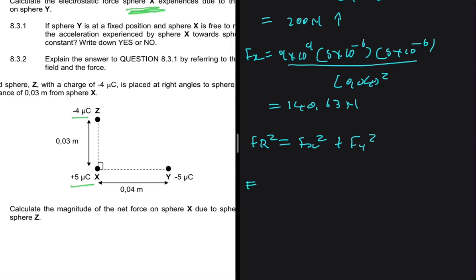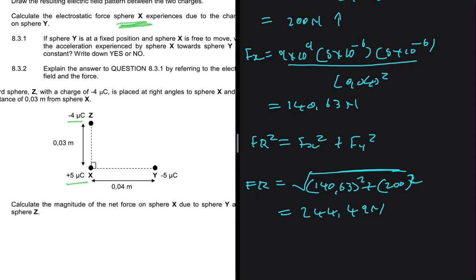So now we can see that F_net squared is equal to F_x squared plus F_y squared. So F_net will be equal to the square root of—so what is F_x? That is 140.63 squared, and then plus F_y, so that is 200 squared. And then when you put that in your calculator, you will get 244.49 newtons. We're only looking for the magnitude of net force, so we don't have to determine the direction. And this is it for this question.